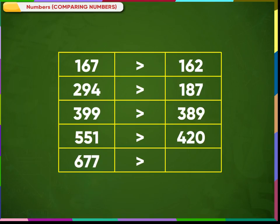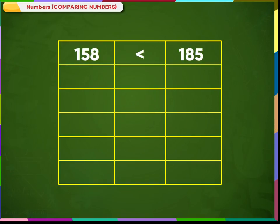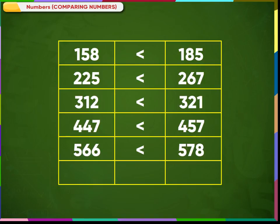677 is greater than 676. We use this symbol for lesser than. 158 is lesser than 185. 225 is lesser than 267. 312 is lesser than 321. 447 is lesser than 457. 566 is lesser than 578. 686 is lesser than 698.